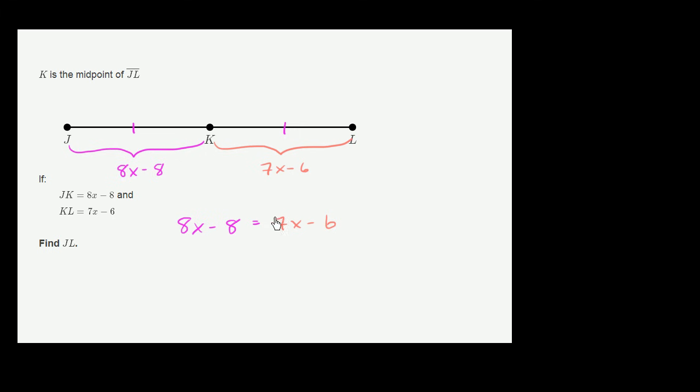And I just want to reemphasize, how do we know that? Well, they told us that K is the midpoint of JL. This is the midpoint, which tells us that this distance is equal to this distance, or 8x minus 8 is equal to 7x minus 6.